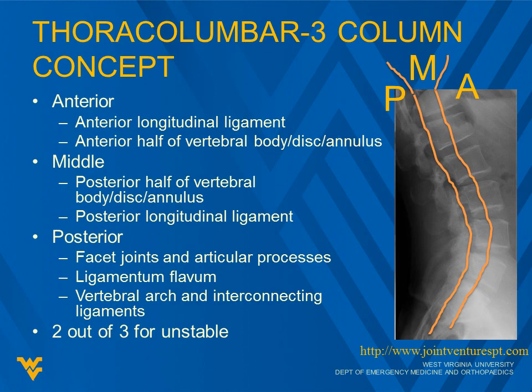Moving on to the thoracolumbar three-column concept, which is a little different from the cervical spine. The anterior column includes the anterior longitudinal ligament and the anterior half of the vertebral body, disc, and annulus. The middle column is the posterior half of the vertebral body, disc, annulus, and the posterior longitudinal ligament. The posterior column includes the facet joints, articular processes, ligamentum flavum, vertebral arch, and interconnecting ligaments. We need to disrupt two out of three columns for an unstable fracture.